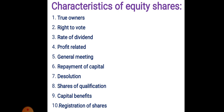Equity shareholders are true owners. They have voting rights and can attend general meetings and elect the board of directors. Their rate of dividend is not fixed and is directly related with the profit. At the time of dissolution, they have the last right to get repayment of capital, and they cannot get repayment of capital during the existence of the company — only if surplus is remaining.